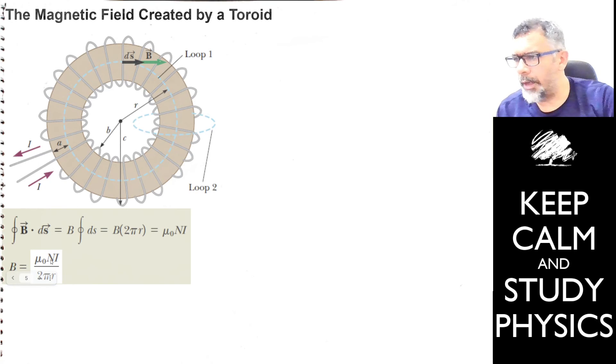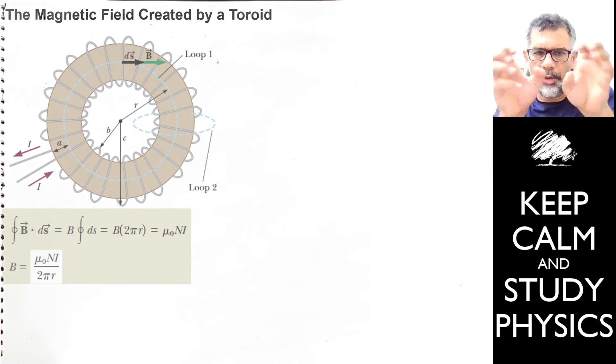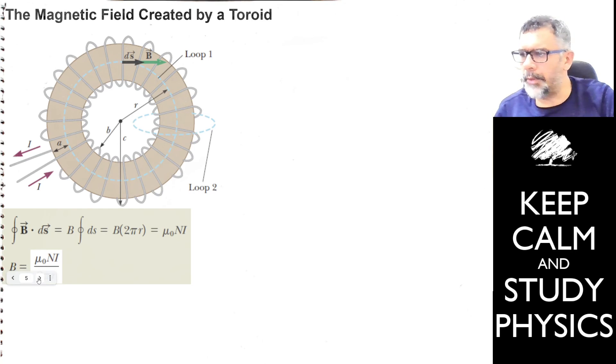It's going to be mu0 times n times i. N is the number of turns, total number of turns on the solenoid, because toroid is a finite solenoid. Solenoid can be infinitely long, but since toroid is finite, it's going to have a certain finite number of n turns. If you know this number of turns, this is going to be mu0 times n times i divided by 2 pi.